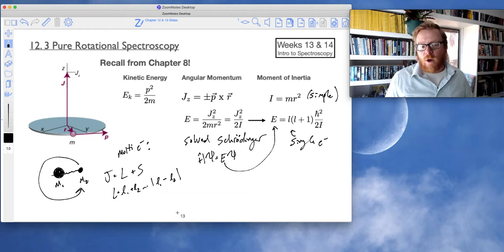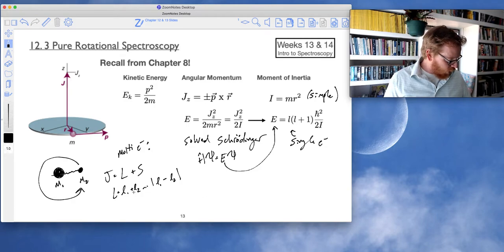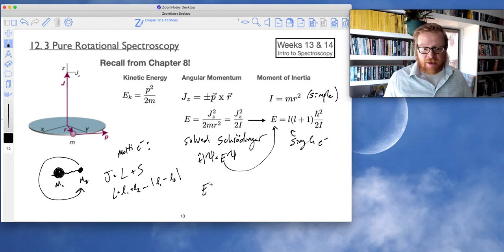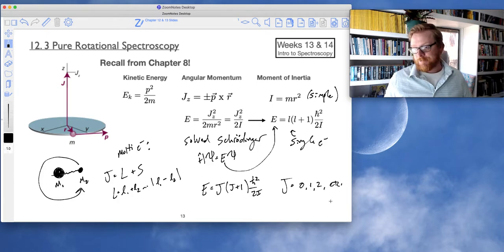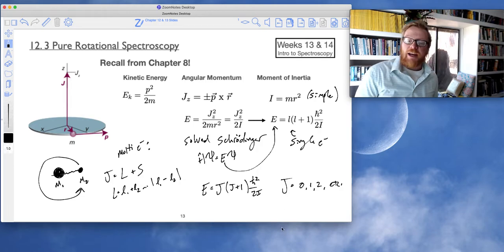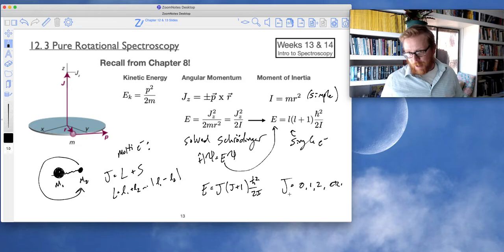So what's important is what we can show, when we apply this to multi-electron systems, then simply this solution can just become E equals big J times J plus 1 times h bar squared over 2i, where J can take on values 0, 1, 2, etc. And this J right here is going to represent our rotational quantum number.